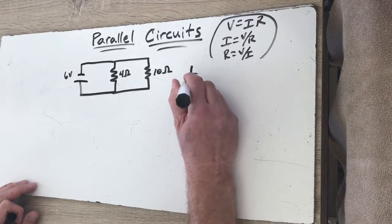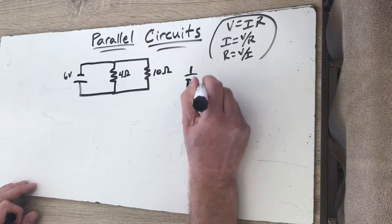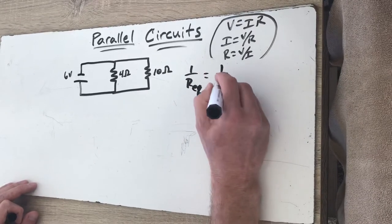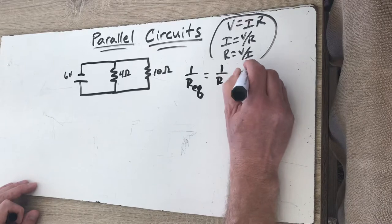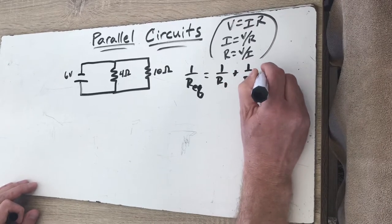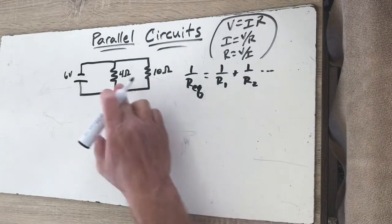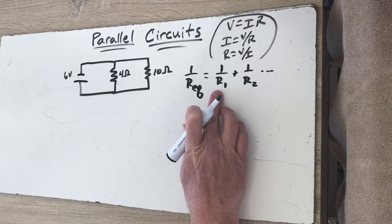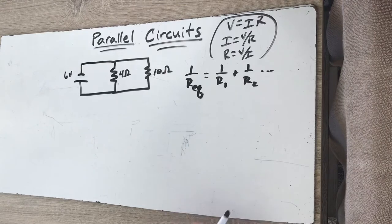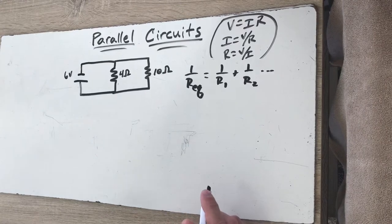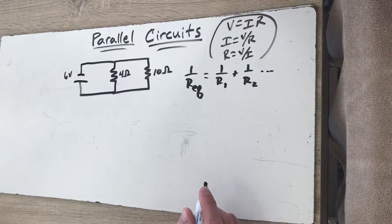My formula is 1 over the equivalent resistance equals 1 over r1 plus 1 over r2. And we're going to continue that on out for however many different pathways we have. So we put the resistance in the first pathway and the resistance in the second pathway. Now watch what happens mathematically when we calculate this.